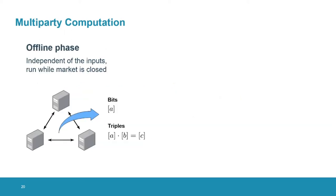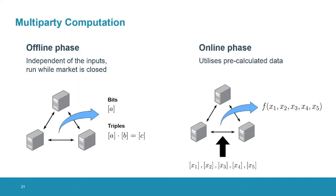In the MPC protocol we use, there is both an offline phase and an online phase. In the offline phase, we do computations that are independent of the inputs, so we can run it while the market is still closed. As output, we get two data types: the bits and the triples. Then in the online phase, we compute the function whose output we actually want — in this case, we process the auction — and we use the pre-processed data, the bits and the triples, which allows us to compute the online phase much more efficiently.